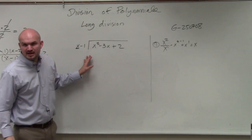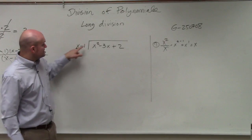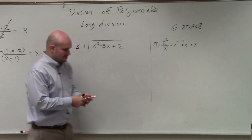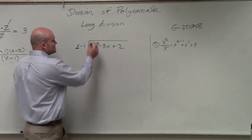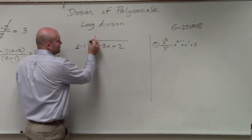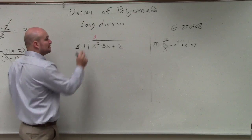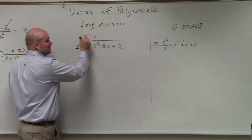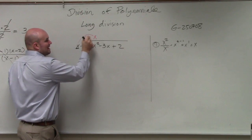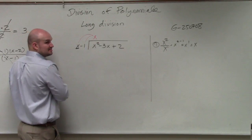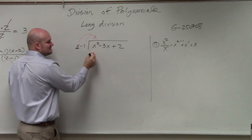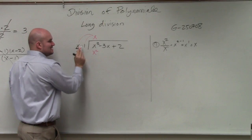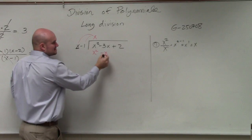Does everybody see that? x divided into x squared goes x times, so we'll put the x right up here. Then, every single time you get your quotient, you have to multiply it by both terms. So x times x is x squared, and x times negative 1 is negative x.